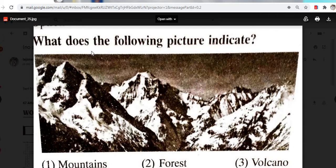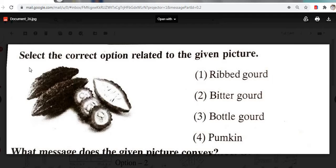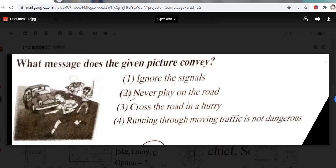What does the following picture indicate? Mountains, forest, volcano. Mountains. Right answer. Select the correct option related to the given picture. Option one: ribbed gourd. Option two: bitter gourd. Option three: bottle gourd. Option four: pumpkin. Option two, bitter gourd is the correct answer. What message does the given picture convey? Ignore the figures, never play on road, cross the road in hurry, running through moving traffic is not dangerous. Option two, never play on the road is the right answer.